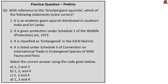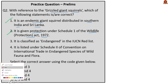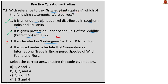Question 2: With reference to the Grizzled Giant Squirrels, which of the following statements is/are correct? Statement 1: It is an endemic giant squirrel distributed in southern India and Sri Lanka — correct. Statement 2: It is given protection under Schedule 1 of the Wildlife Protection Act of 1972 — correct. Statement 3: It is classified as 'Endangered' in the IUCN Red List — wrong; it is classified as 'Near Threatened'. Statement 4: It is listed under Schedule 2 of CITES — correct. The correct answer is option B: 1, 2 and 4.